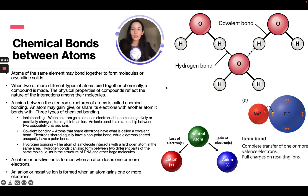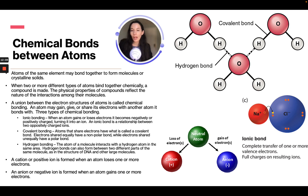Let's talk about some chemical bonds between atoms. Atoms of the same element may bond together to form molecules or crystalline solids. When two or more different types of atoms bind together chemically, a compound is made. The physical properties of compounds reflect the nature of the interaction among molecules. A union between the electron structures of atoms is called chemical bonding, and an atom may gain, give, or share its electrons. There are three types of chemical bonds. An ionic bond forms when an atom gains or loses an electron, turning it into an ion — it is a relationship between two oppositely charged ions.